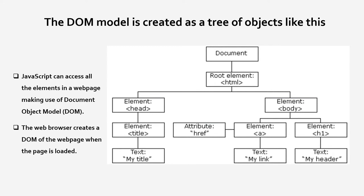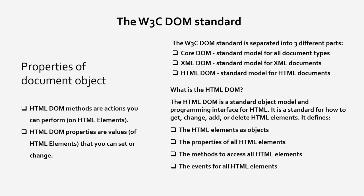JavaScript can access all the elements in a web page using the Document Object Model. The W3 Document Object Model standard has three different parts: Core DOM, XML DOM, and HTML DOM.